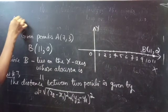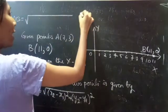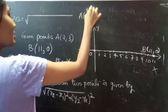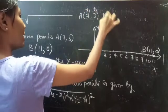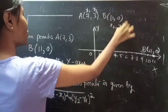So AB equals square root of... You are having A(7, 3), that is x1, y1, and B(11, 0), that is x2, y2.